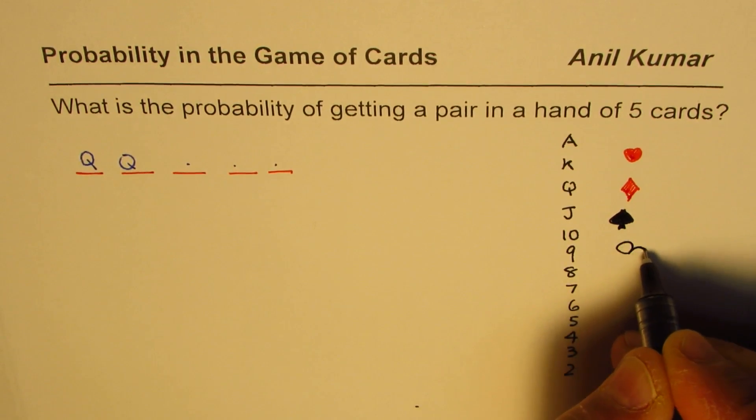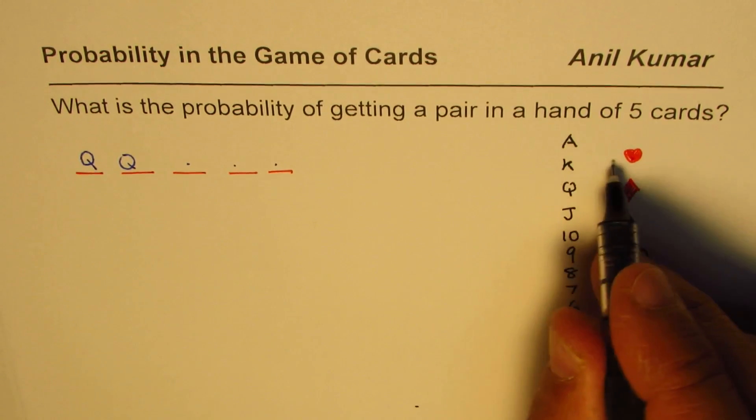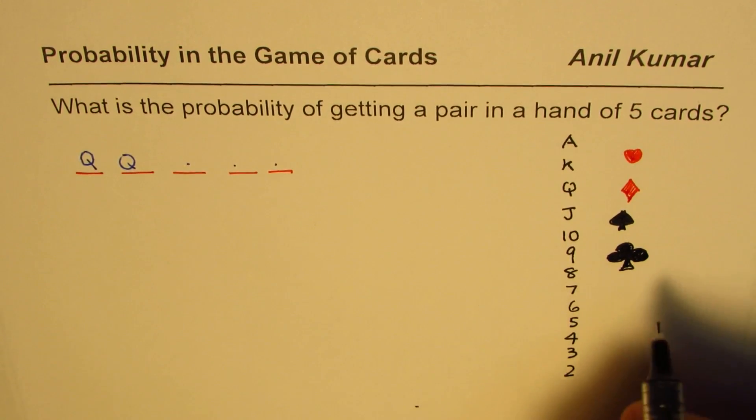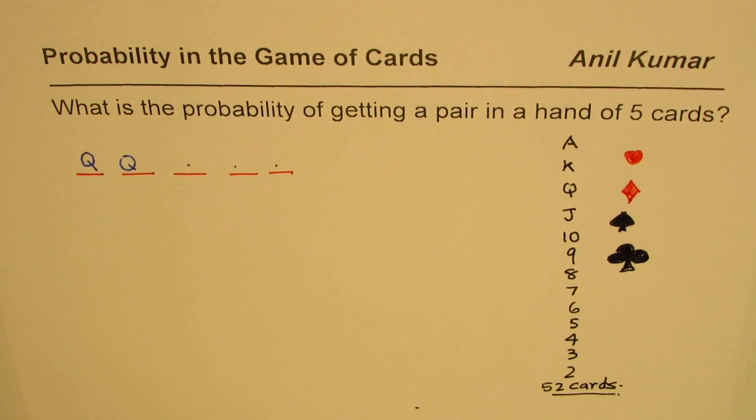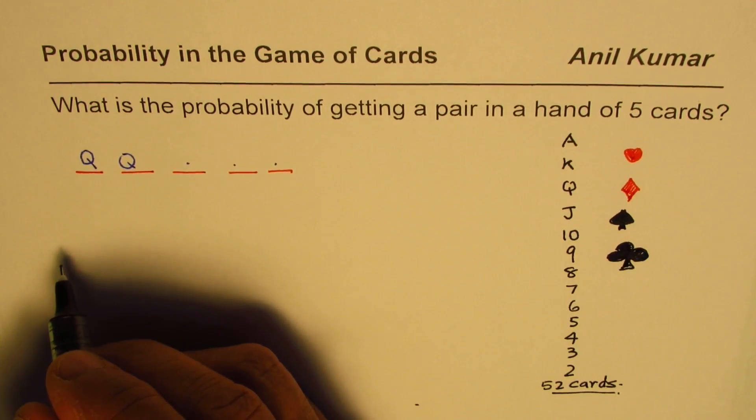These are the four suits. Every card, for example, will have four aces, four kings. Four times 13 will be 52. So we have 52 cards total. When you are drawing five cards, the probability will be...